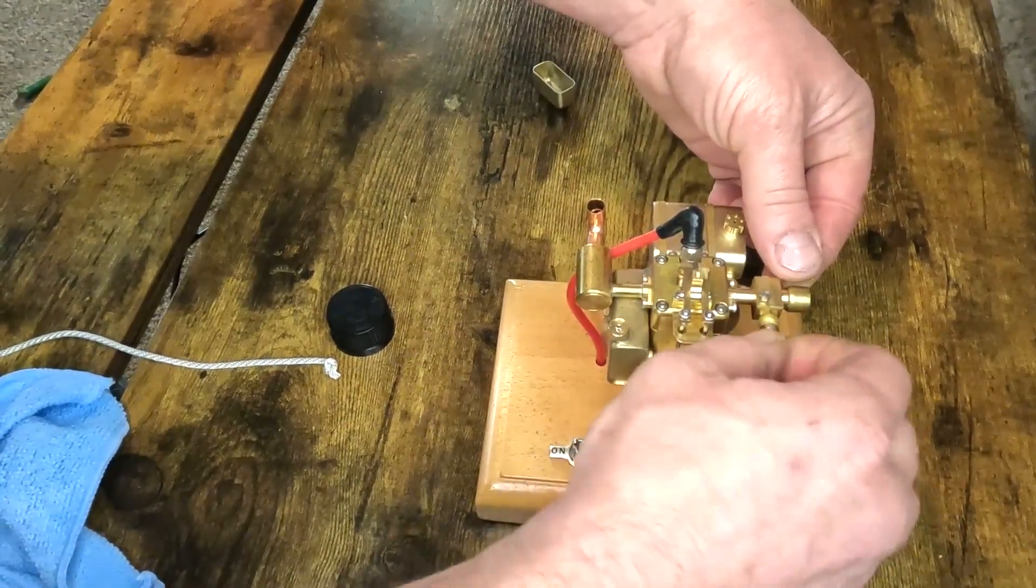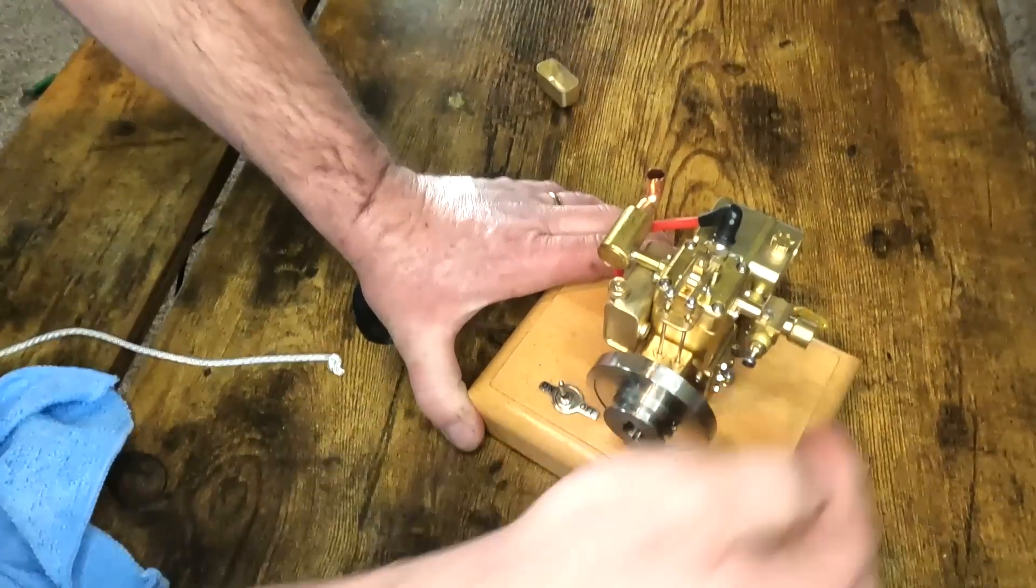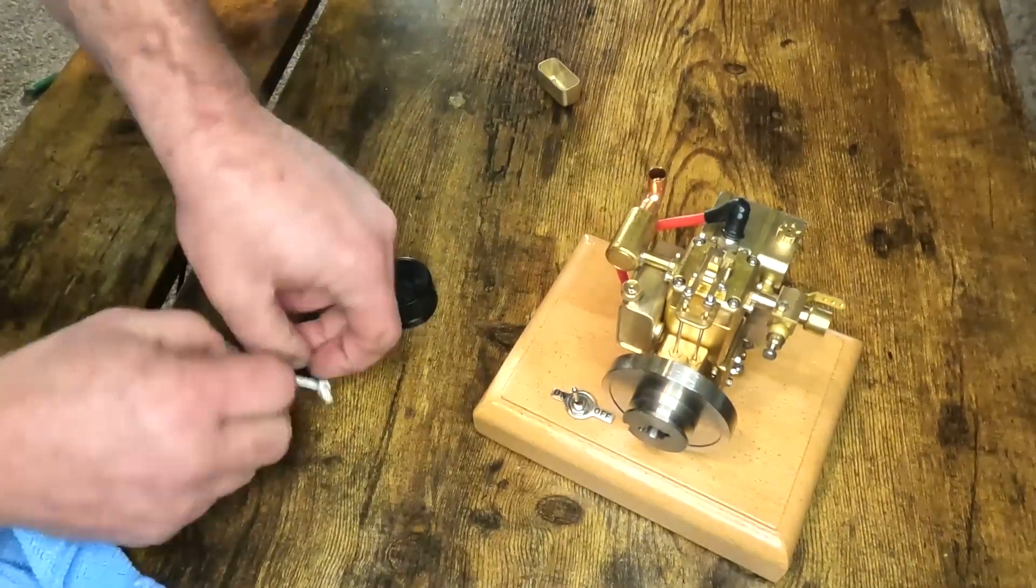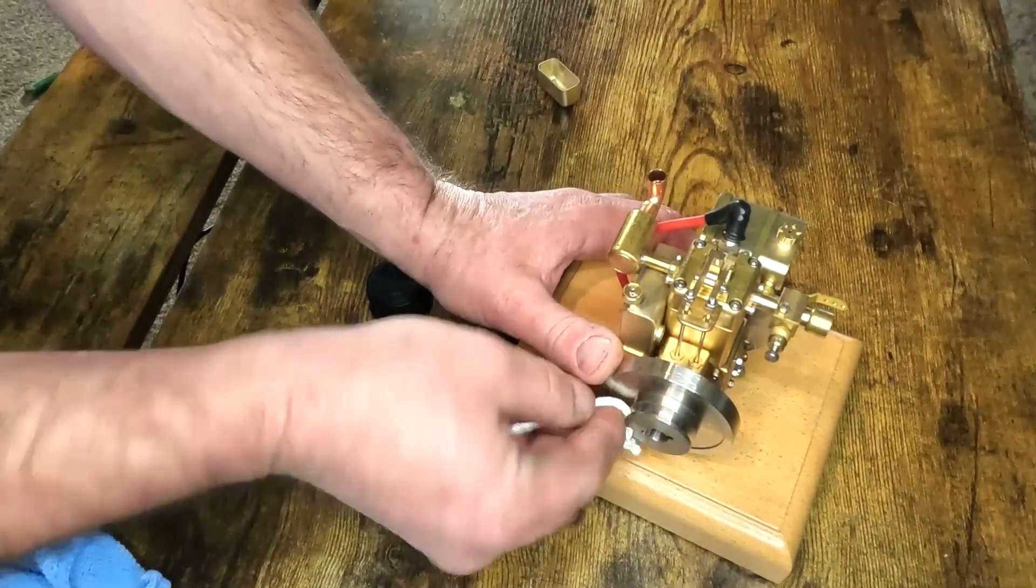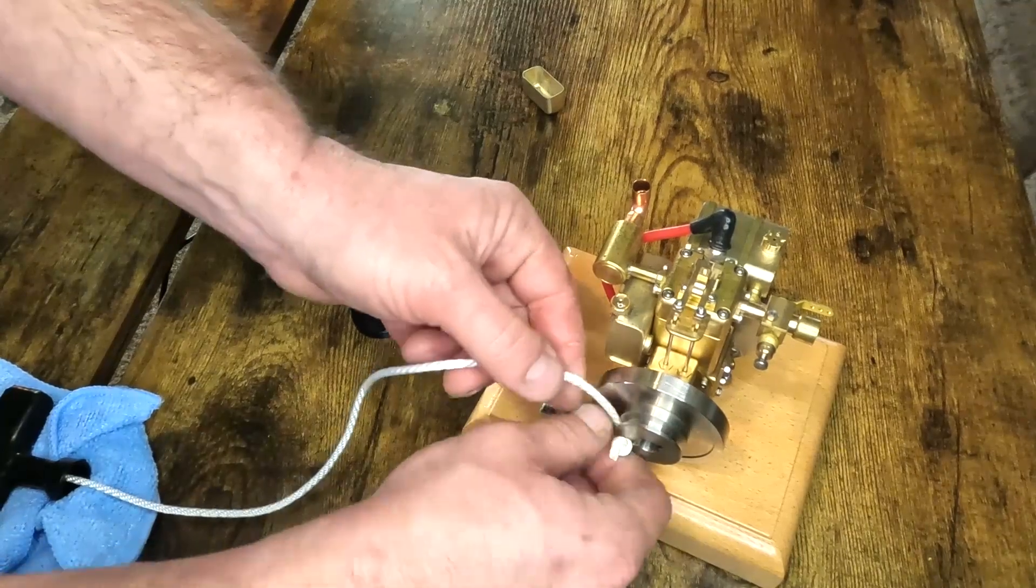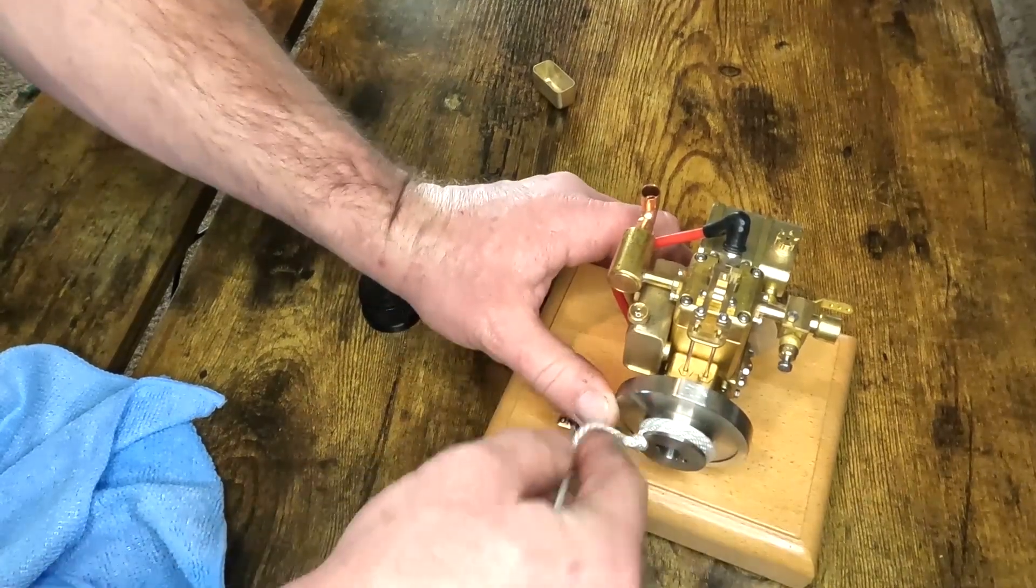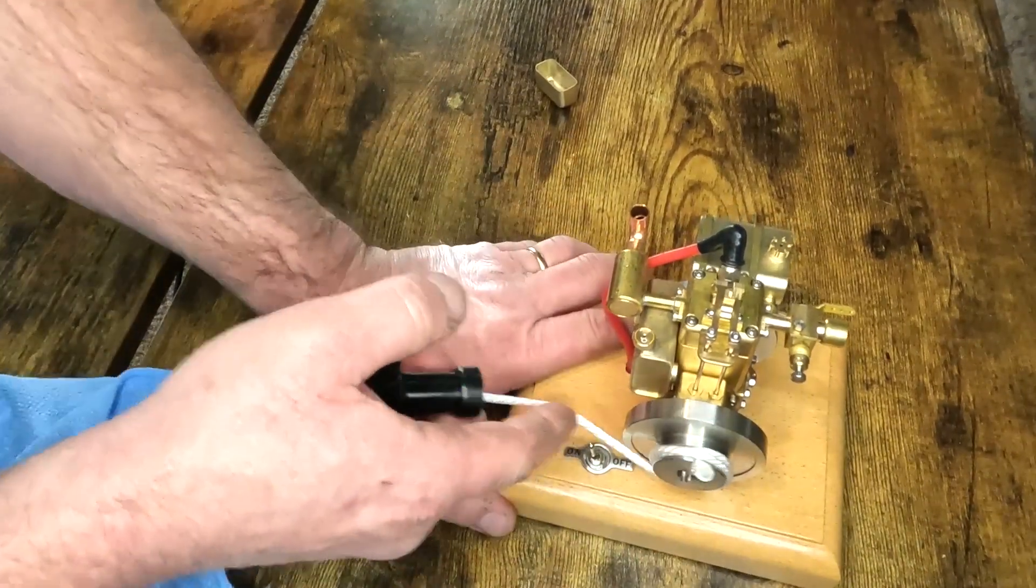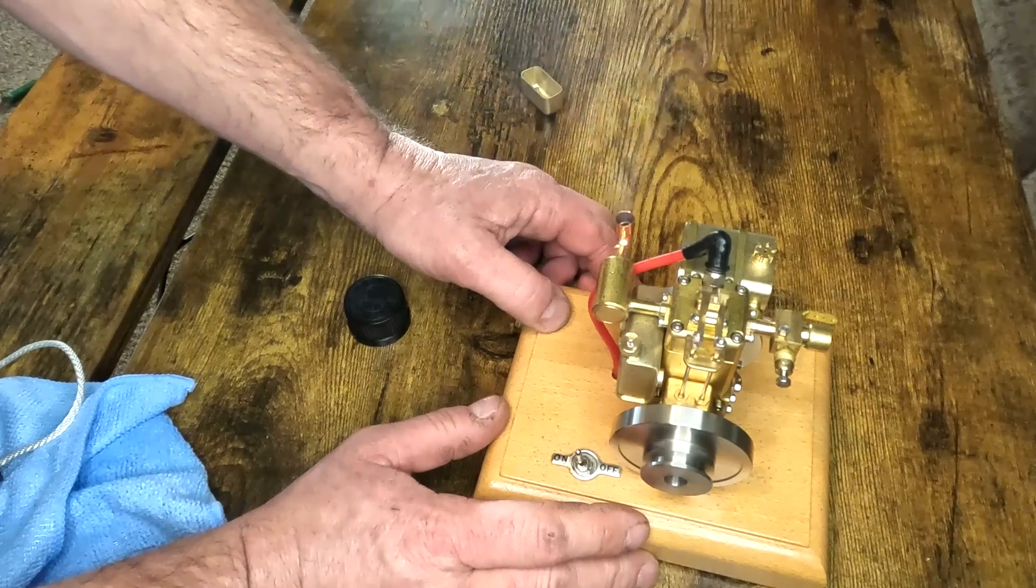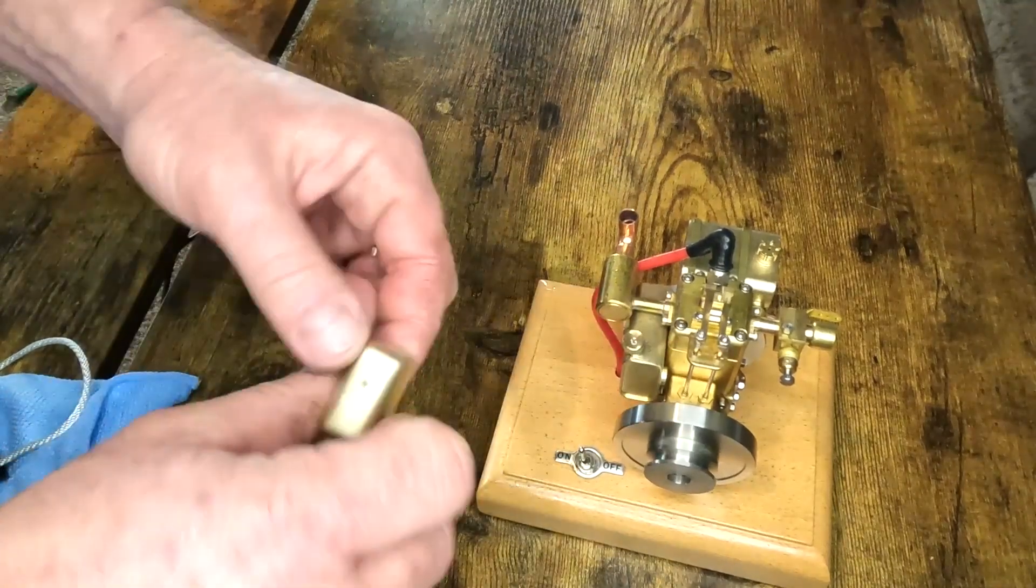I'll go ahead and try the rope start. I don't know if we're running rich or lean. I'll open that up a little bit. Wrap our rope around it a little more time. This runs a lot slower than I thought it did because I think it fired a few times with the drill when we first tried to start it. I couldn't tell. The drill was running faster than the motor.